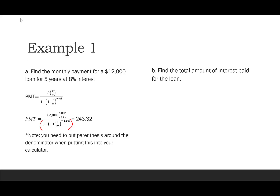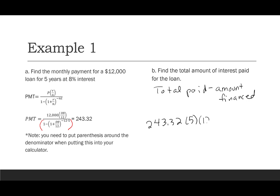Part two asks for the total interest paid. Interest equals total paid minus amount financed. Total paid is $243.32 × 12 × 5 = $14,599.20. Subtract the $12,000 financed, and we find the interest paid was $2,599.20.